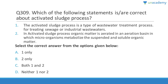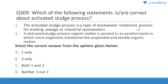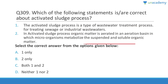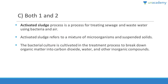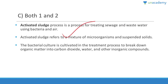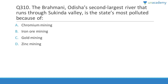Question 309: Activated sludge process is a type of wastewater treatment for treating sewage or industrial wastewater — correct. In the activated sludge process, organic matter is aerated in an aeration basin where microorganisms metabolize the suspended and soluble organic matter — also correct. It is a process for treating sewage using bacteria and air, directly from NCERT.